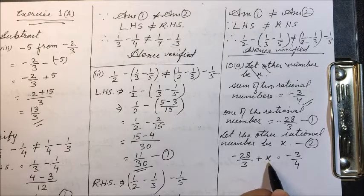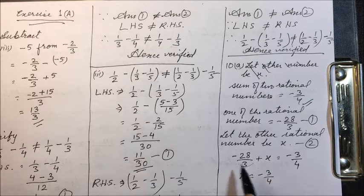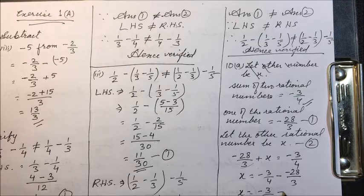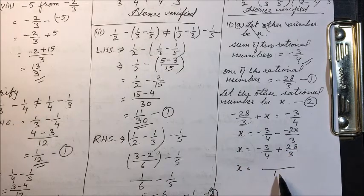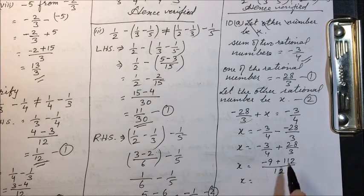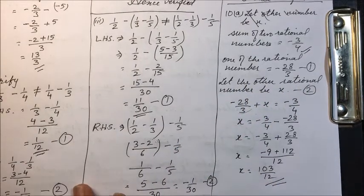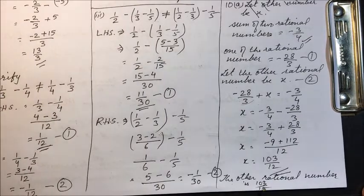Taking minus 28 upon 3 to the right hand side, x equals minus 3 by 4 plus 28 upon 3. Taking LCM as 12, we get minus 9 plus 112, which is 103 upon 12. So the other rational number is 103 upon 12.